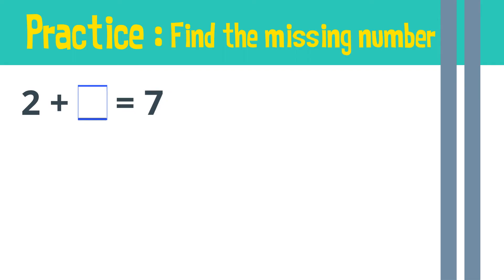Two plus what number equals seven? To find the missing number, simply subtract two from seven. Seven minus two gives us... five! So the missing number is five.